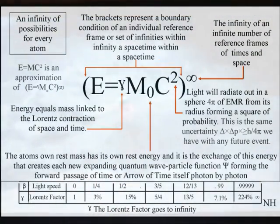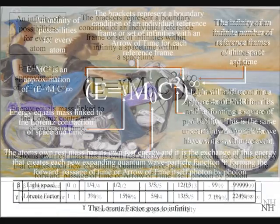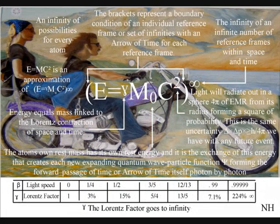It is a probability wave of a potential future event, and during the act of measurement, the magnitude squared, or C², gives a probability for different potential future outcomes. The brackets represent the dynamic boundary condition of the reference frame.